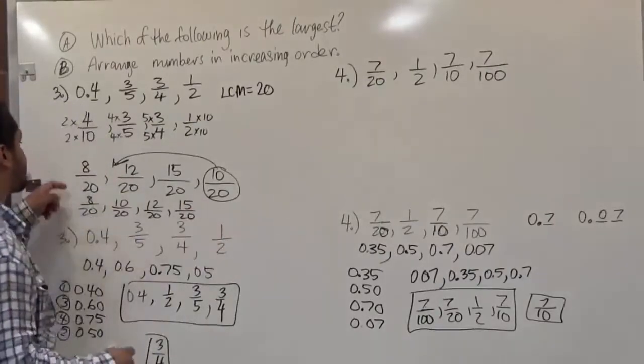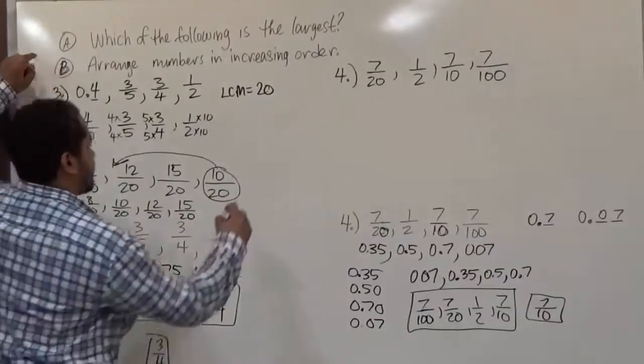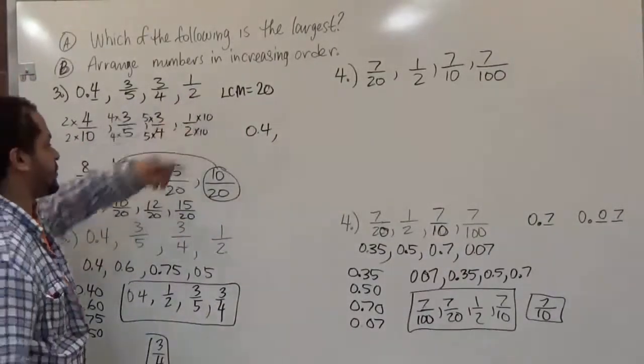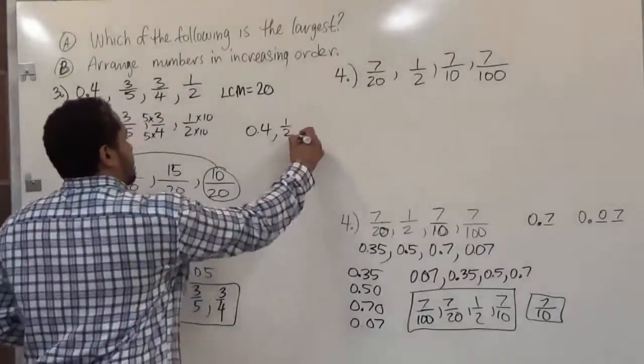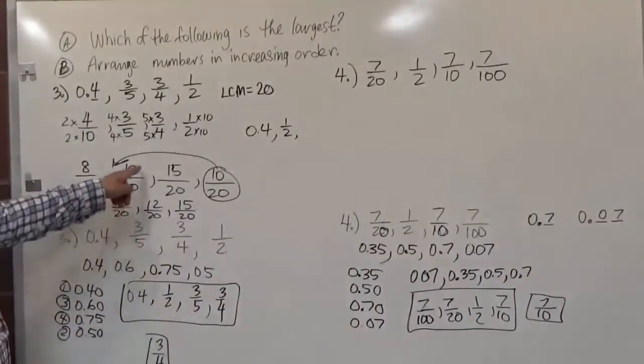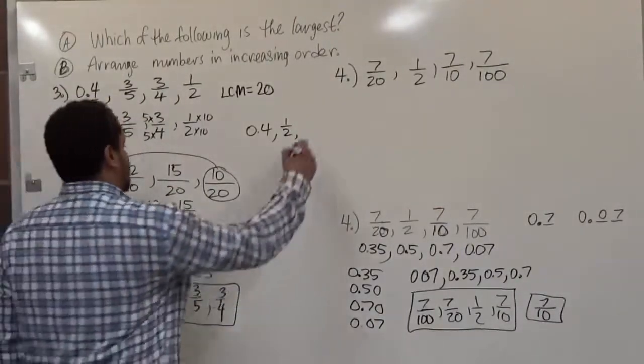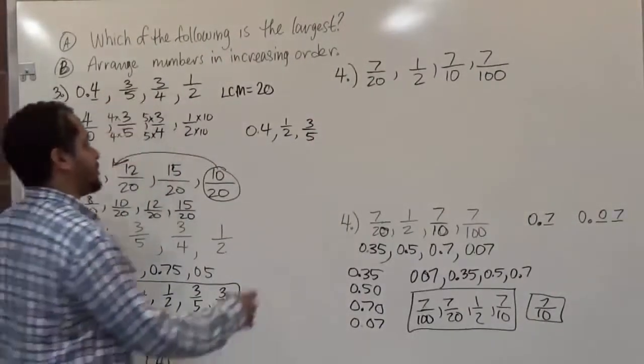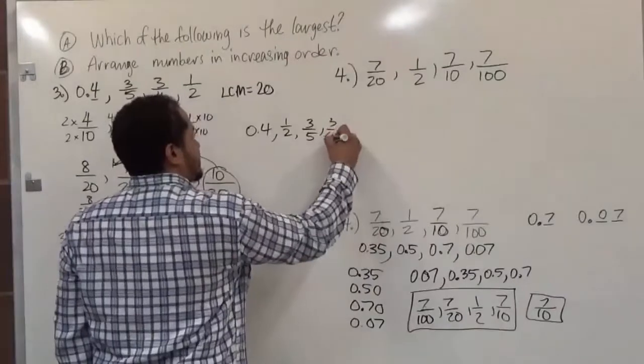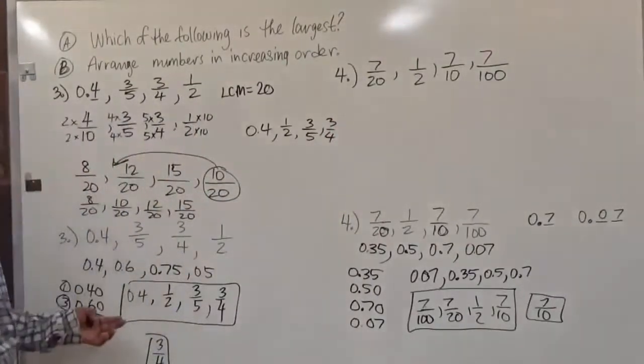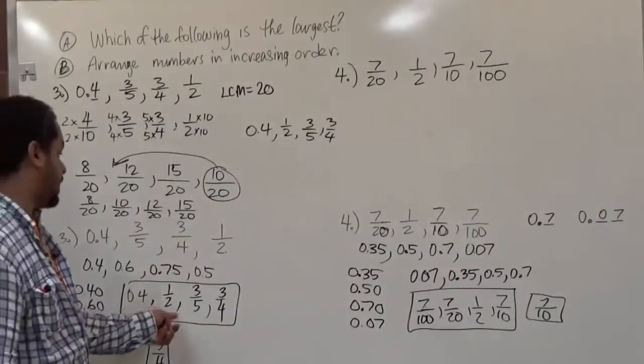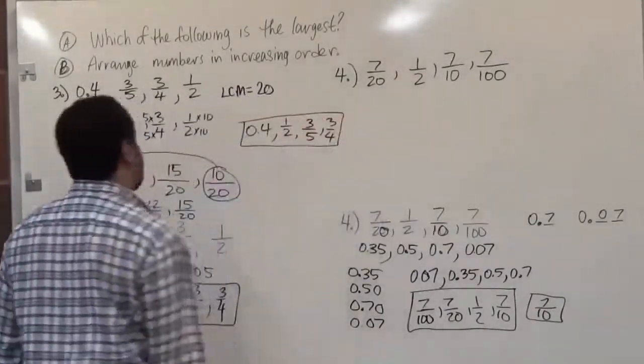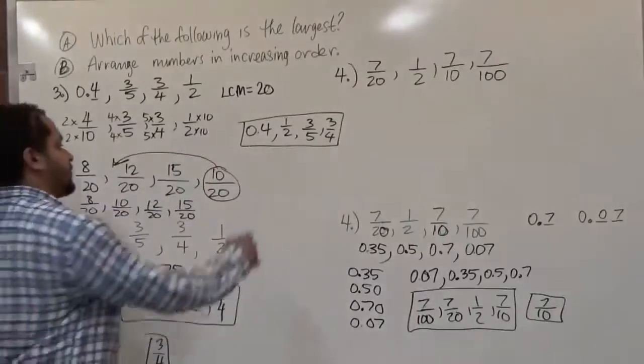And if we rewrote these based on how they used to look, we know the 0.4 again is first. The second number we have here is the 10 over 20, which is the 1 half. The third number we have on this list is the 12 over 20, which was 3 fifths. And the fourth one we have here is the 15 over 20, which is the 3 quarters. And this gives us the same exact result we got before: 0.4, 1 half, 3 fifths, and 3 quarters. So this checks off correctly again. And again, the largest one is just 3 quarters in the front, the one in the lead.